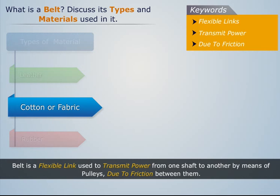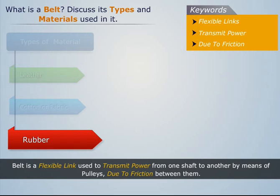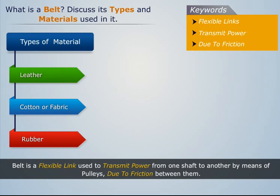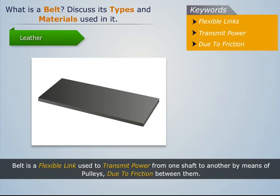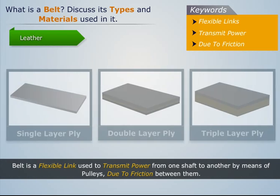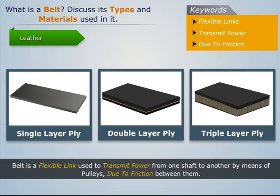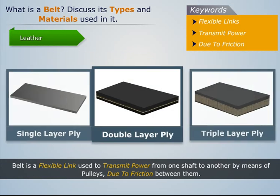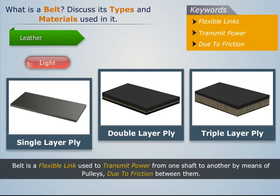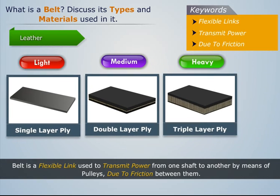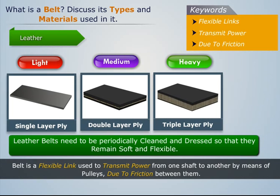Leather: It is the most commonly used material for making belts. The best leather belts are made from 1.2 to 1.5 meter long strips. These belts are specified according to the number of layers of leather used, such as single, double, or triple ply, and according to the thickness of hides used, such as light, medium, or heavy. Leather belts need to be periodically cleaned and dressed so that they remain soft and flexible.